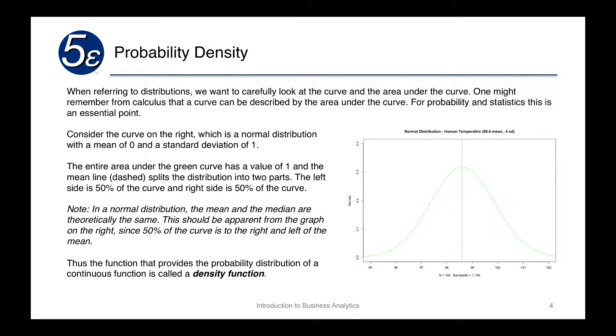When referring to these distributions, we want to carefully look at the curve and the area under the curve. You might remember from calculus that a curve can be described by the area under the curve. For probability and statistics, this is an essential point. Consider the curve on the right, where we have a normal distribution with a mean of zero and a standard deviation of one. The entire area under the green curve has a value of one, and the mean line, the dashed line, splits the distribution into two parts. The left side is 50% of the curve, and the right side is 50% of the curve.